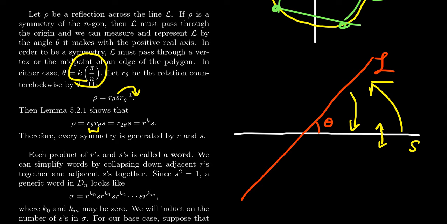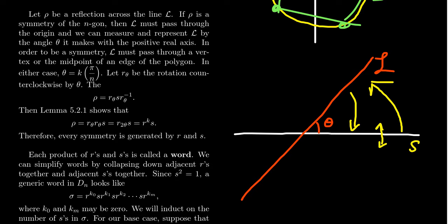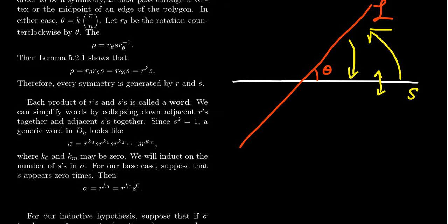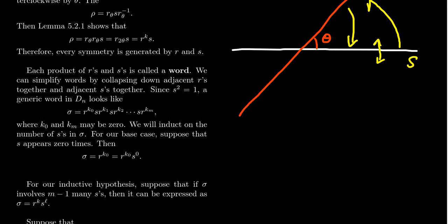When R_θ combines with R_θ after moving S past R_θ⁻¹, we get R_θ² = rotation by 2θ = 2·(kπ/n). But rotation by 2·(kπ/n) is the same as R^k (rotation by 2πk/n applied once). So ρ = R^k · S. This shows every reflective symmetry can be written as R^k S for some k, completing the argument.